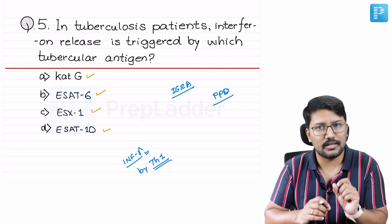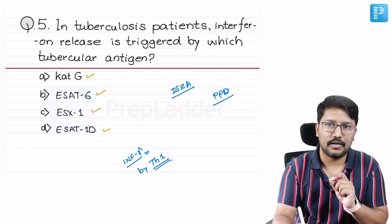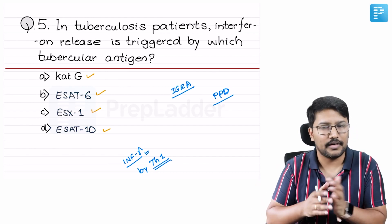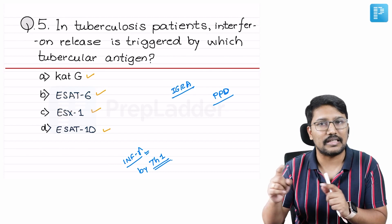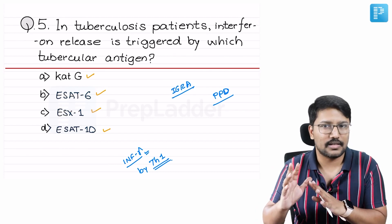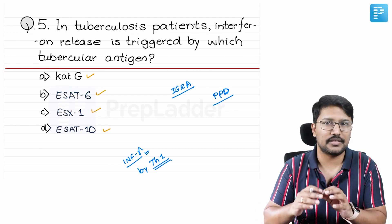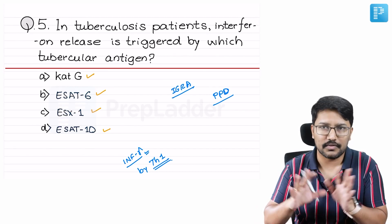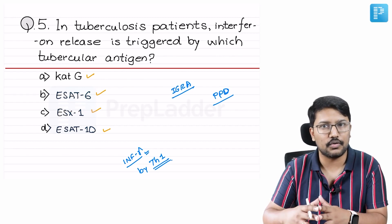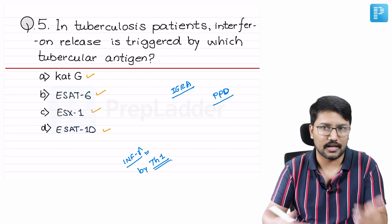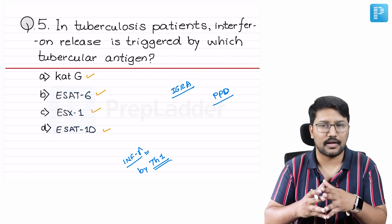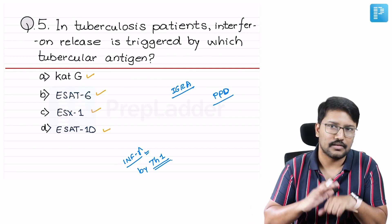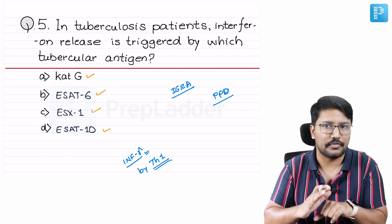Whenever there is TH1 cell activation, they produce TNF-alpha, which is involved in recruitment of macrophages at the site of infection. It also produces interferon gamma, which is concerned with vasotoxic activity — vasodilatation, erythema formation, and edema formation because of exudation. Whatever exudative manifestation we talk about in tuberculosis — exudative effusion here, effusion there — it is because of interferon gamma. The edema we see when we do the PPD test, the Mantoux test, is also because of interferon gamma.